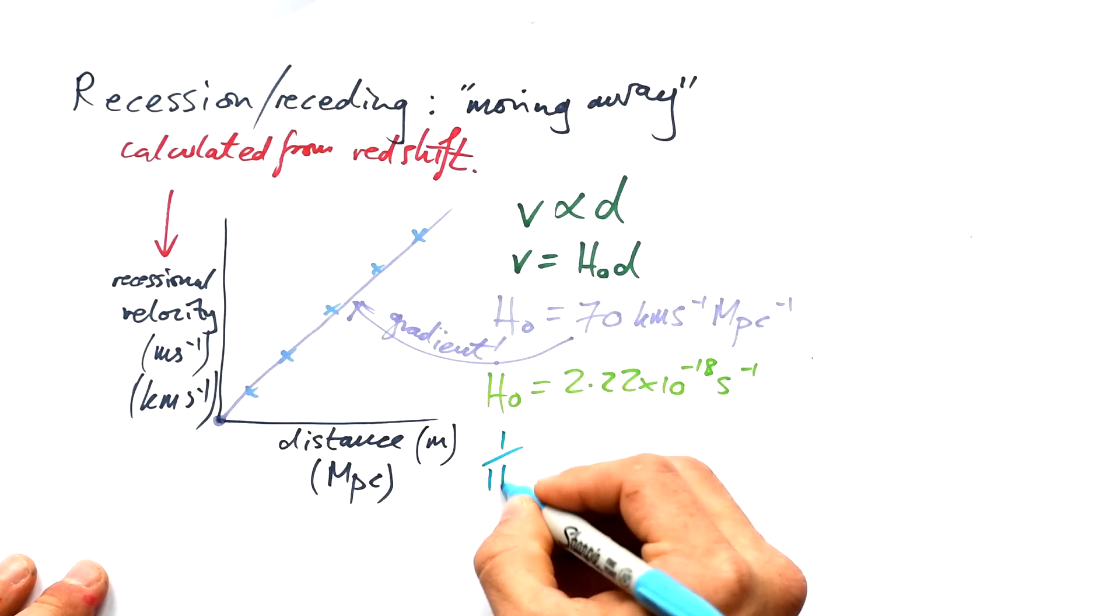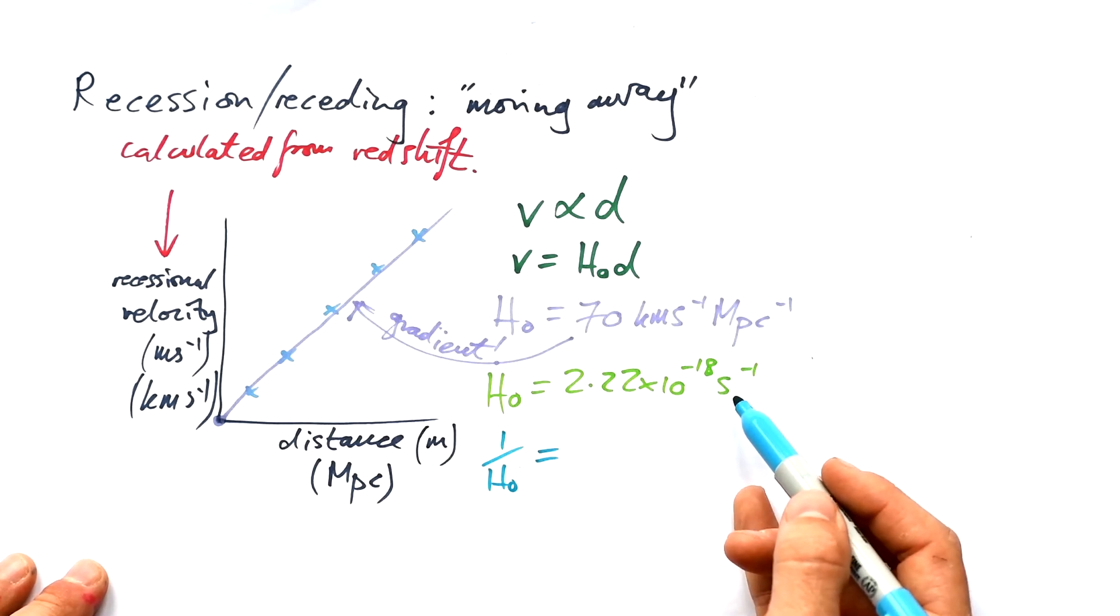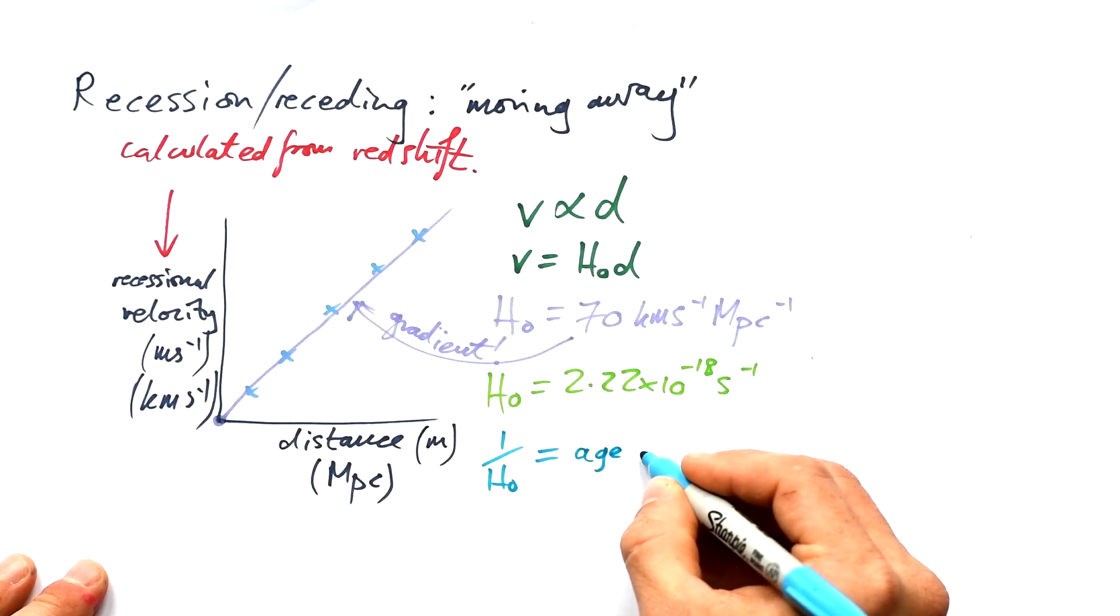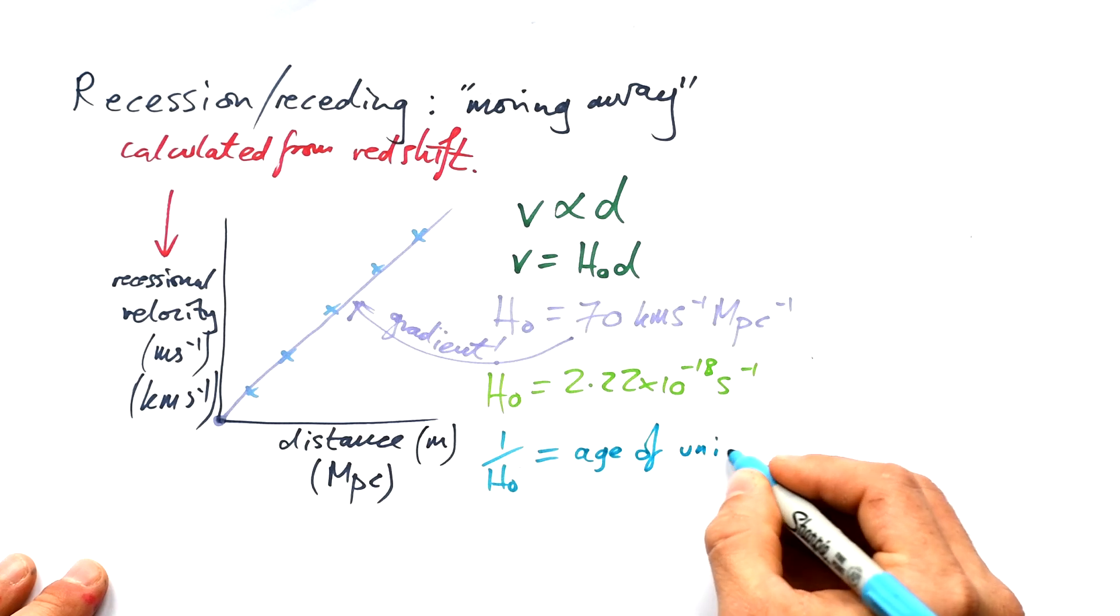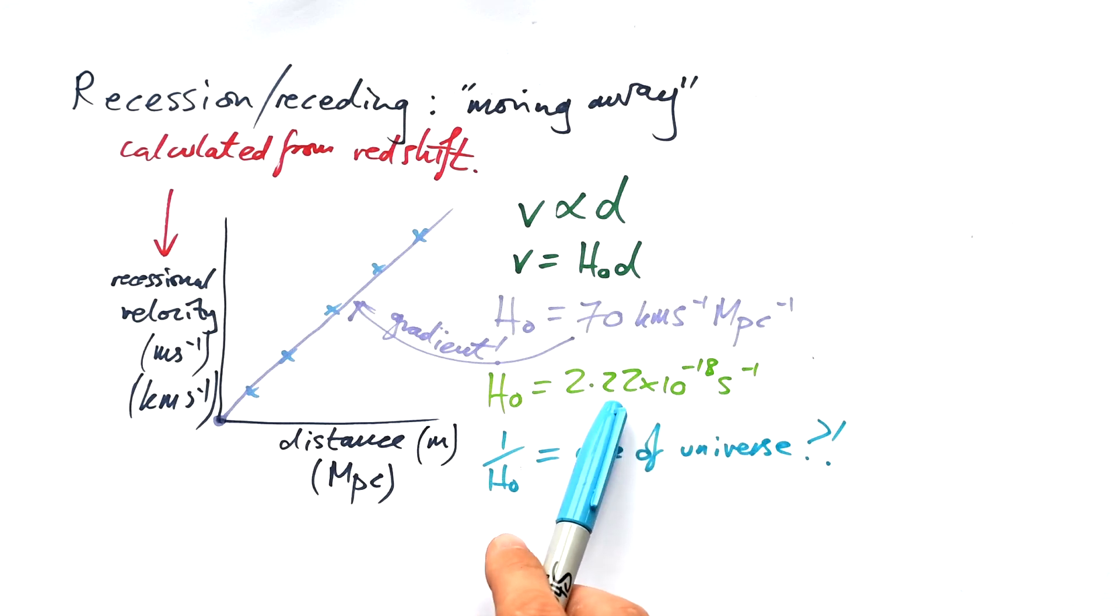But if we wanted to actually find out a time from this, if we do one over the Hubble constant, we end up with not s to the minus one, but seconds. What does that actually give you? It theoretically gives you the age of the universe. If the theory is correct, and well, we'll never know because no one was there, but if the theory is correct, then if we do one divided by this tiny, tiny number here, we'll get a huge number in seconds, and that gives us the age of the universe.